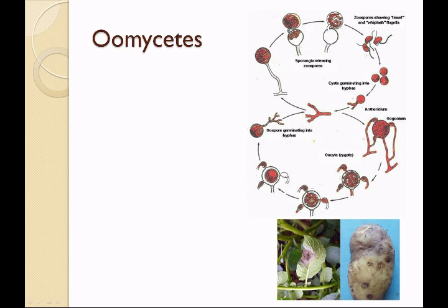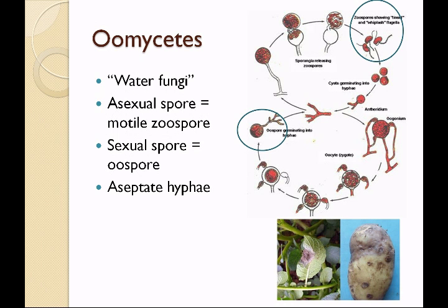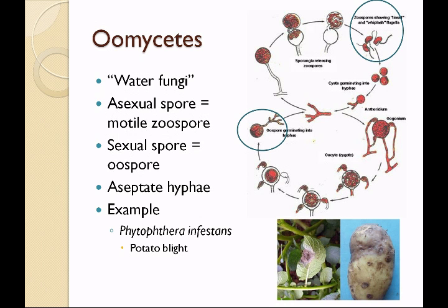Fungi are classified into groups based upon their sexual spores. The oomycetes are known as the water fungi. Their asexual spore is a motile zoospore, and the sexual spore is an oospore. They have aseptate hyphae. They don't have much clinical significance, but they do have great significance to agriculture. There is a fungus known as Phytophthora infestans which causes potato blight. If you're of Irish ancestry, you might be in the United States because of this fungus — it destroyed many potato crops in Ireland.